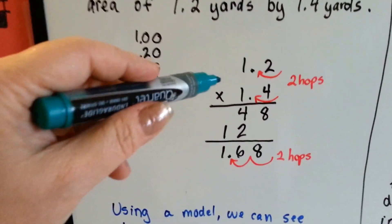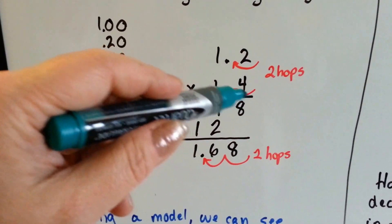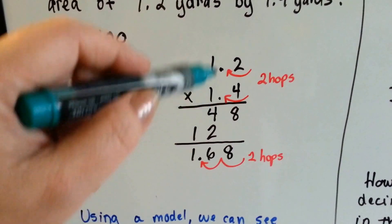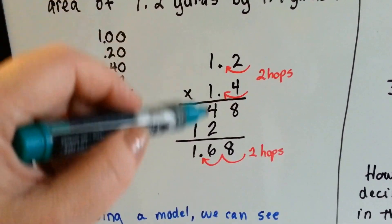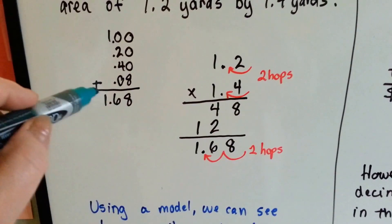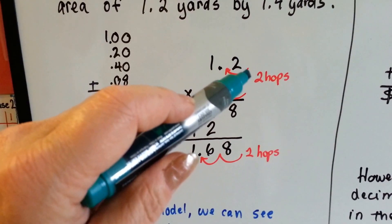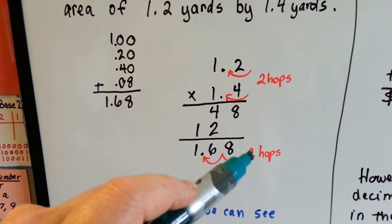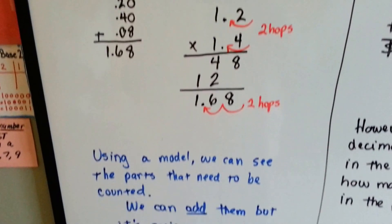We can also multiply them — the 1.2 times the 1.4. We do 4 times 2 is 8, 4 times 1 is 4, and then we move over to the tenths place: 1 times 2 is 2, 1 times 1 is 1. We total them up and get 168, but we need to count the hops in the equation: 1, 2. And that's how many go in the product: 1, 2. So we have 1.68.